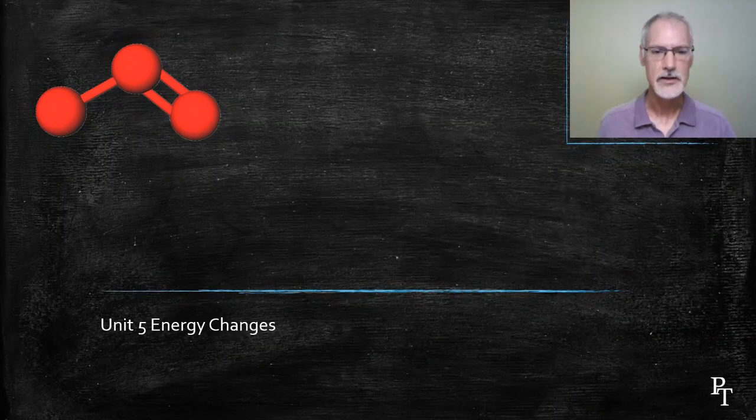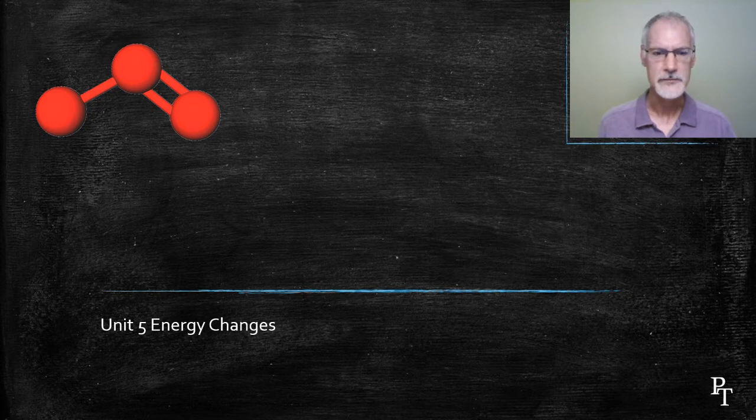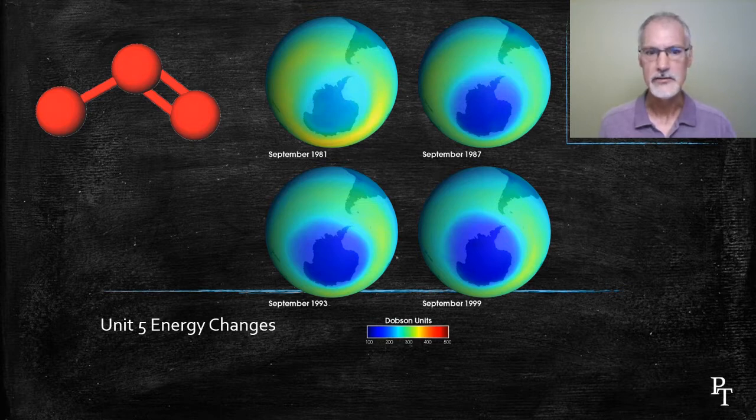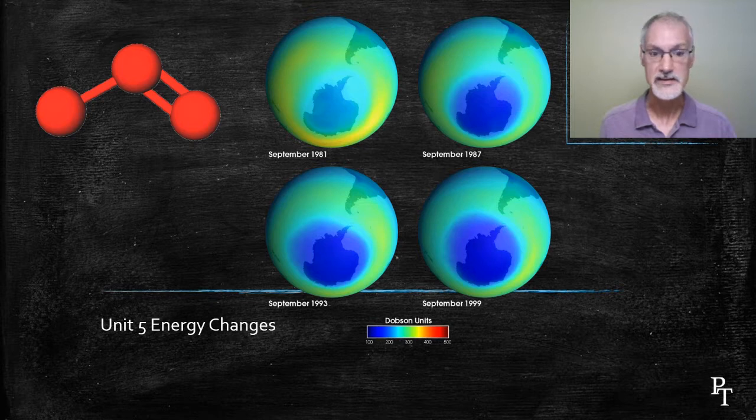Ozone, the molecule you see here shown on the left, drew considerable interest at the turn of the century due to its depletion. Here are some images that show how in a 20-year span from 1981 to the year 2000, the amount of ozone in our upper atmosphere, particularly above the poles, began to deplete. You can see that by the intensity of the color, indicating a decrease in its concentration.